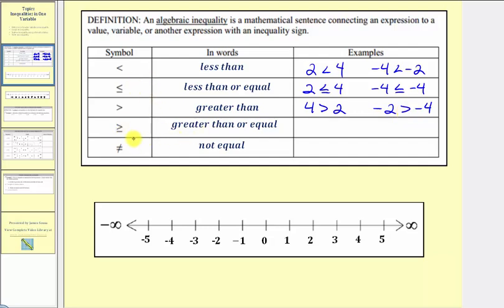Next we have the greater than or equal symbol. If four is greater than two, then four is greater than or equal to two. And because of the equal part, we can also say negative four is greater than or equal to negative four — this inequality is true because of the equal part. Finally, we have the not equal symbol. For example, four doesn't equal two, and negative two doesn't equal negative four.